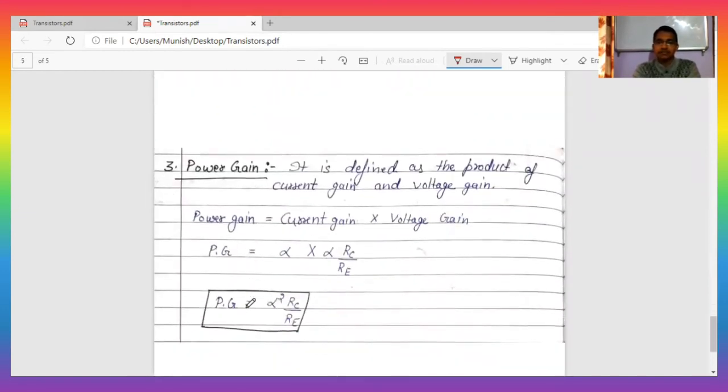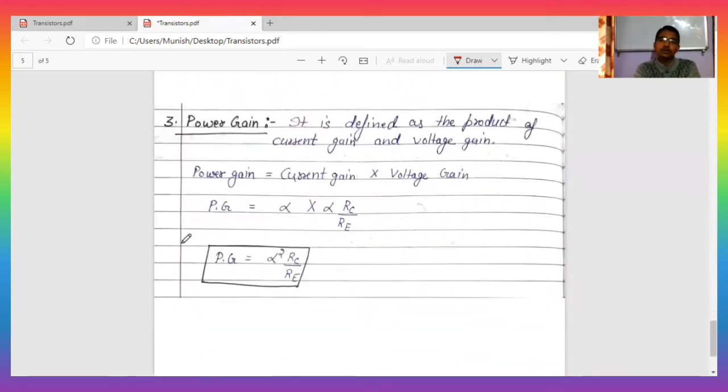Now power gain. Power gain is the product of current gain and voltage gain. Whatever result you get by multiplying them, that is your power gain.